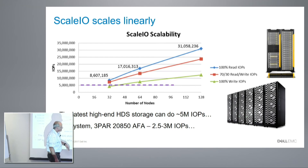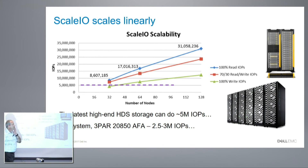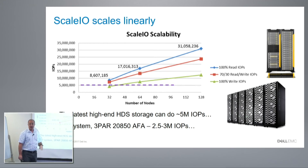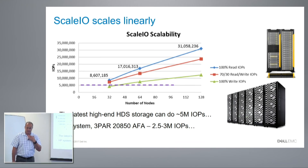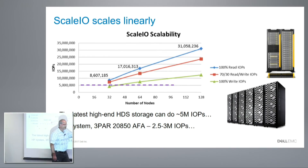For comparison, HDS can get a max of 5 million IOPS per system, and HP 3PAR gets about 2.5 million per system. But a 3PAR system has 64 or 100 nodes connected to it — you already have those nodes. Why buy more 3PARs? Just throw the system out, put the drives in the nodes, and you're all set. These ScaleIO nodes are hyper-converged — both SDS and SDC.